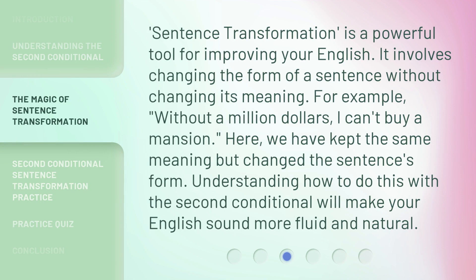Sentence transformation is a powerful tool for improving your English. It involves changing the form of a sentence without changing its meaning. For example, 'without a million dollars, I can't buy a mansion.' Here, we have kept the same meaning but changed the sentence's form. Understanding how to do this with the second conditional will make your English sound more fluid and natural.